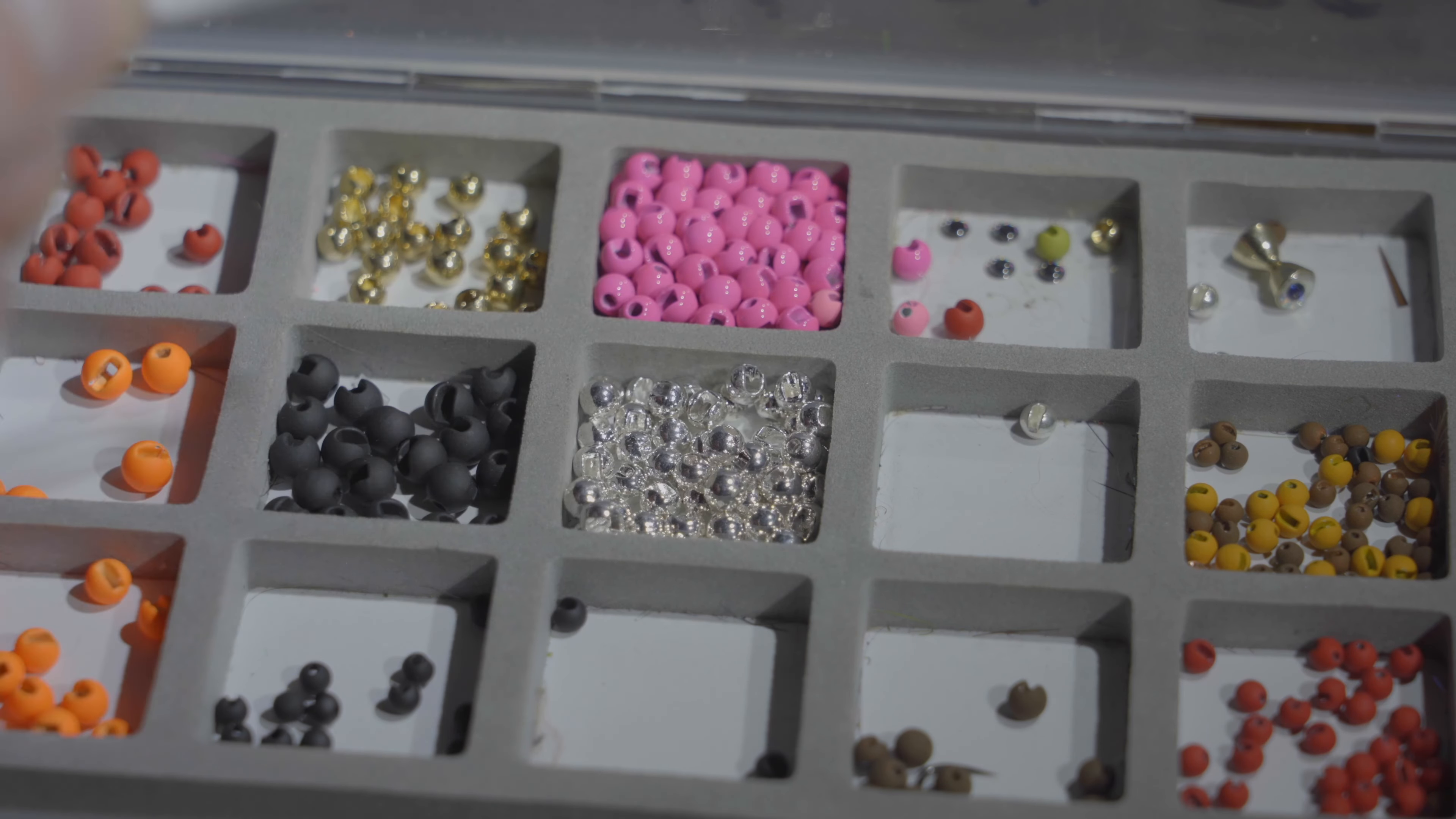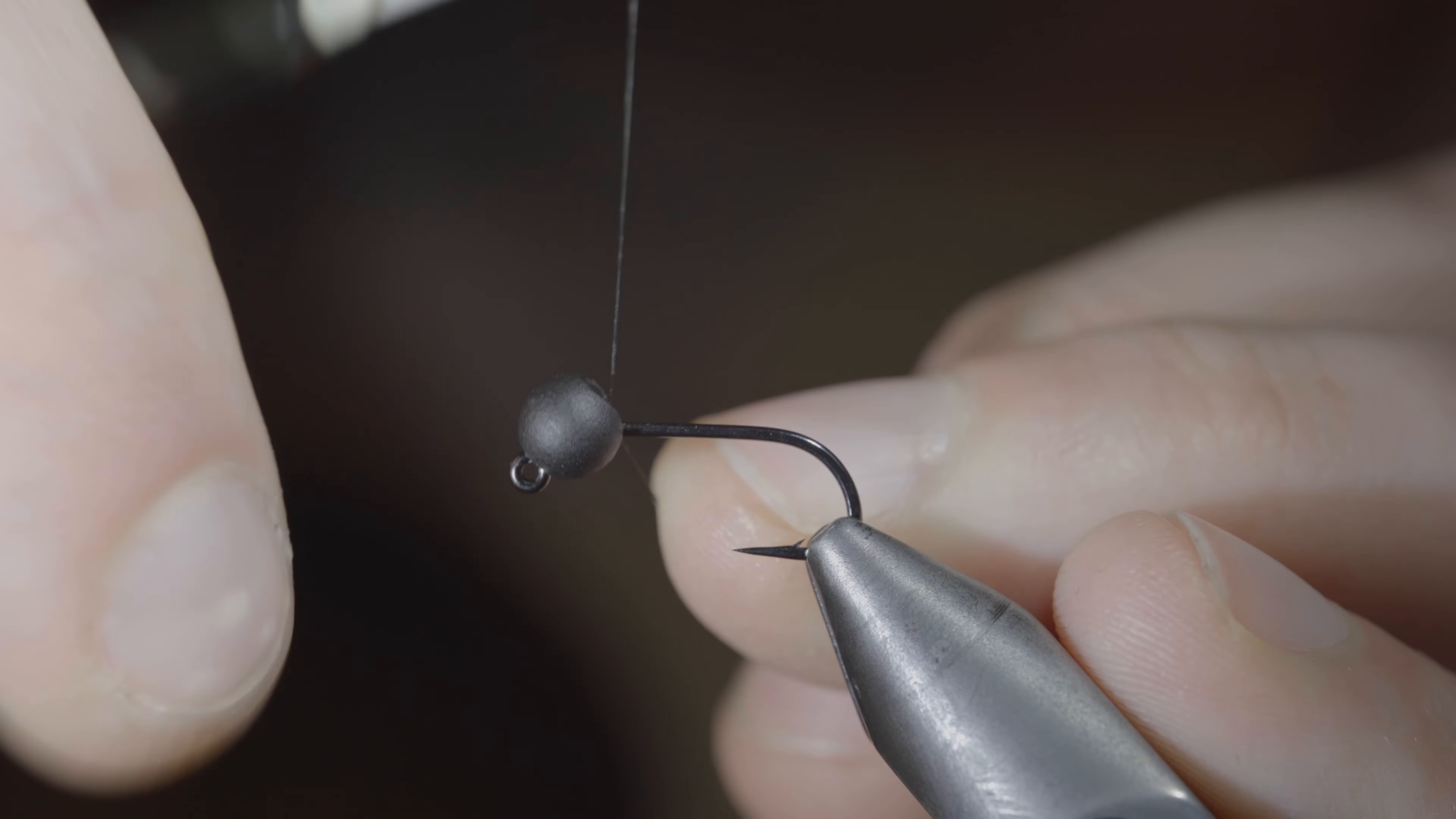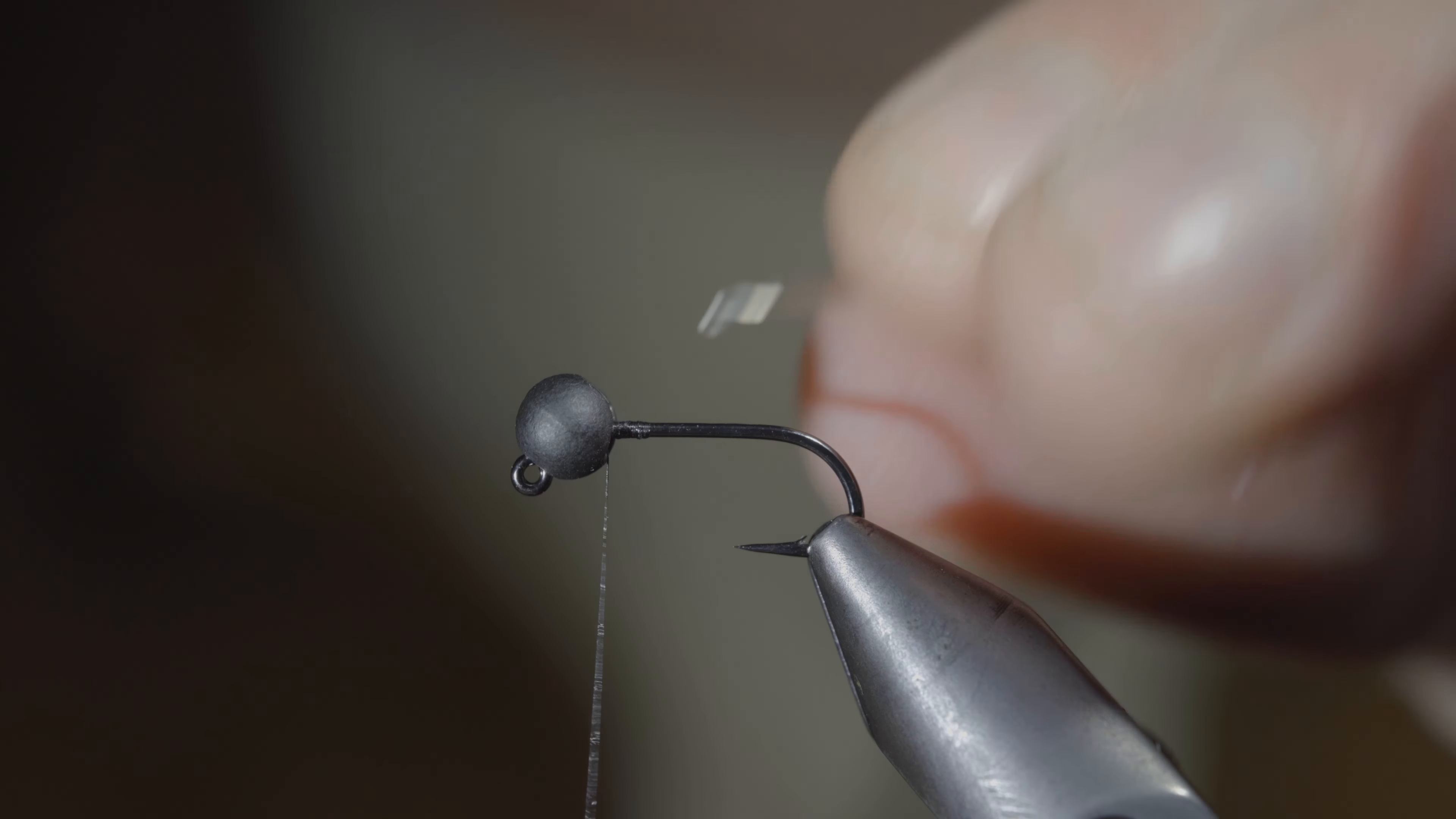This is an ultra buggy stonefly that is sure to catch you some fish. To tie it, we'll start off with a euro hook along with an oversized slotted bead.